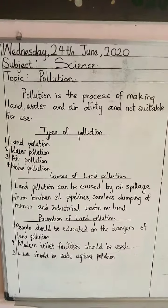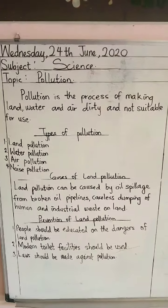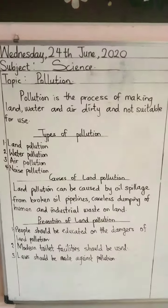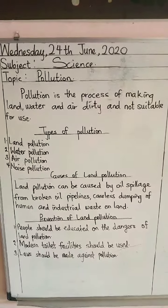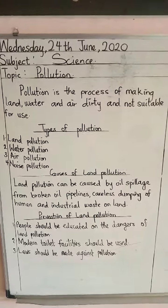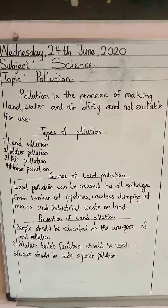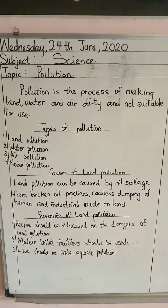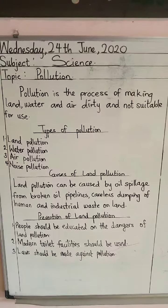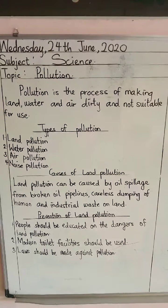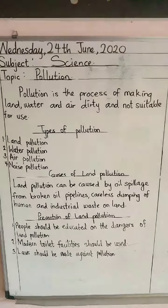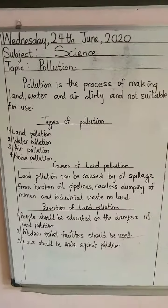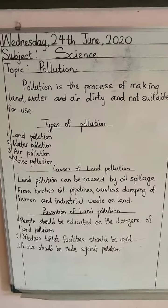We have some preventions. Number one: people should be educated on the dangers of land pollution. If you contaminate your land, you cannot plant crops and there will not be food in that environment — if you cannot plant, then you cannot eat. So it's better you do not contaminate your land, and more people should be educated on how to keep away from land pollution.